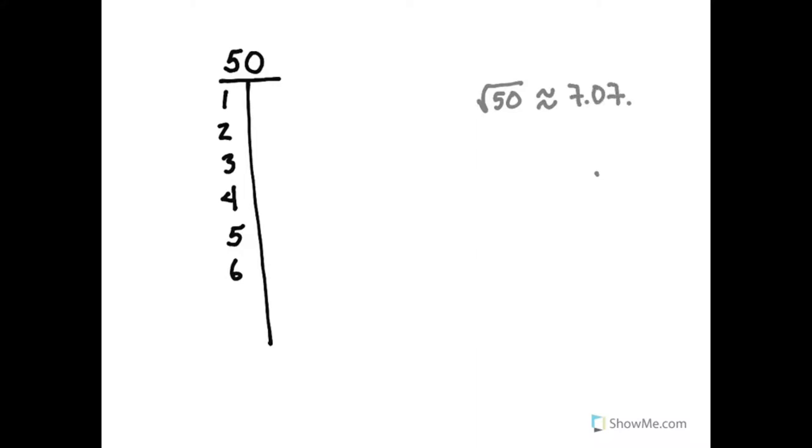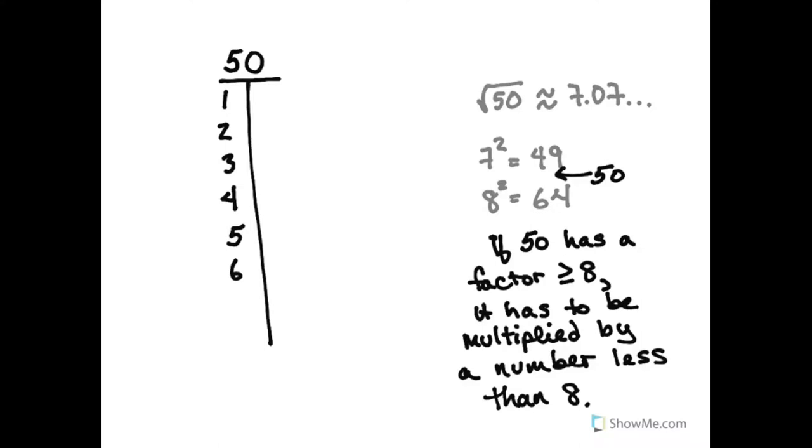It's 7.07 dot dot dot. So if 50 has a factor that's 8 or greater, it's going to have to be multiplied by something less than 8. So I don't need to go past 7 in my list and that's a really useful trick.